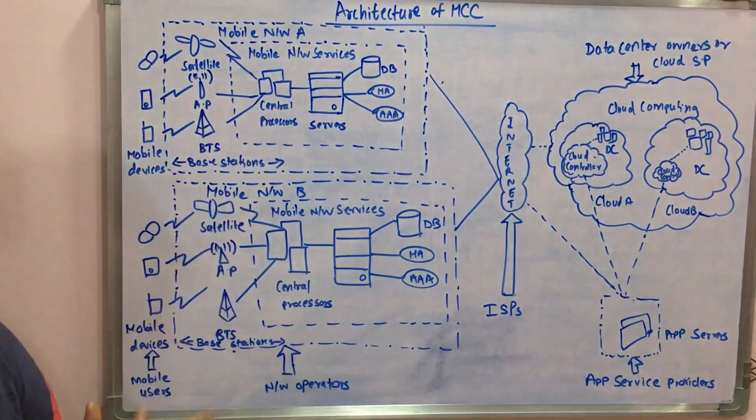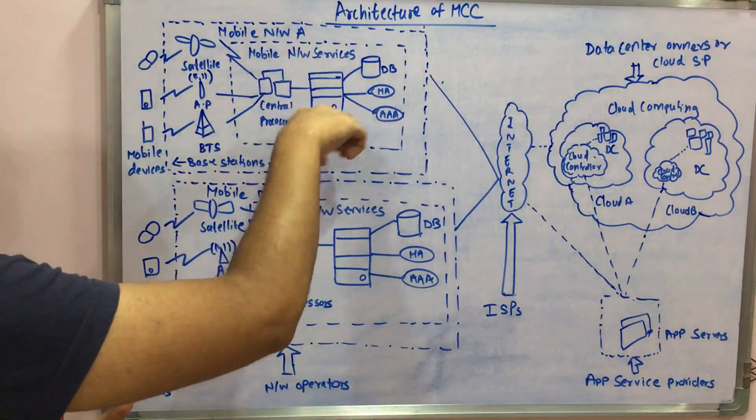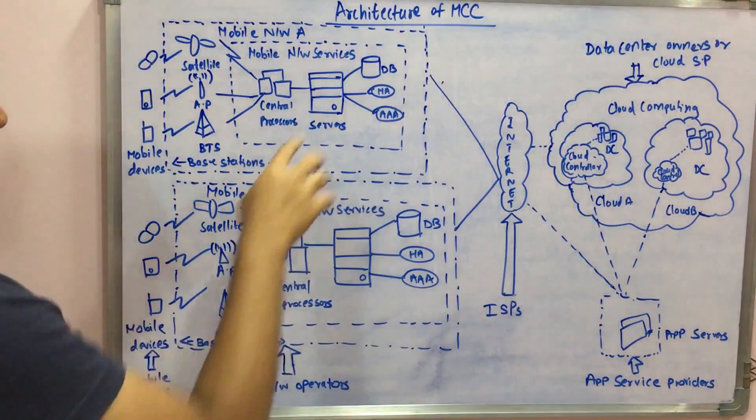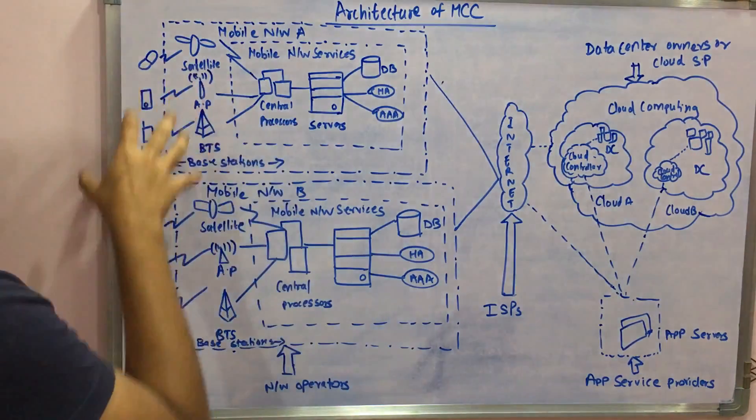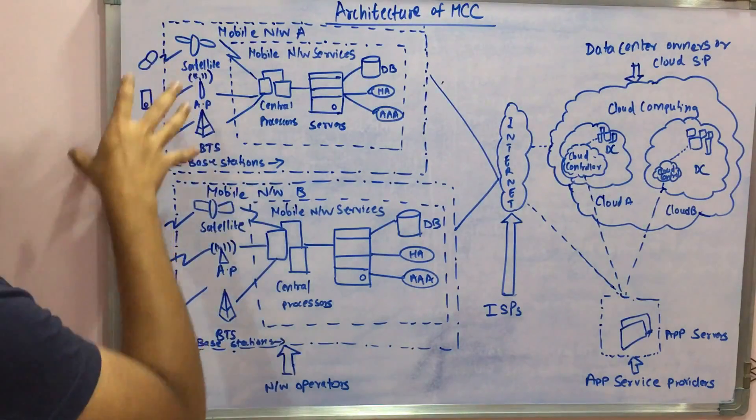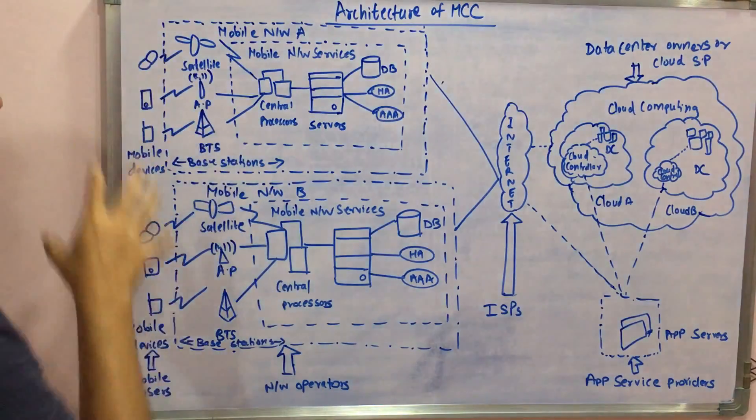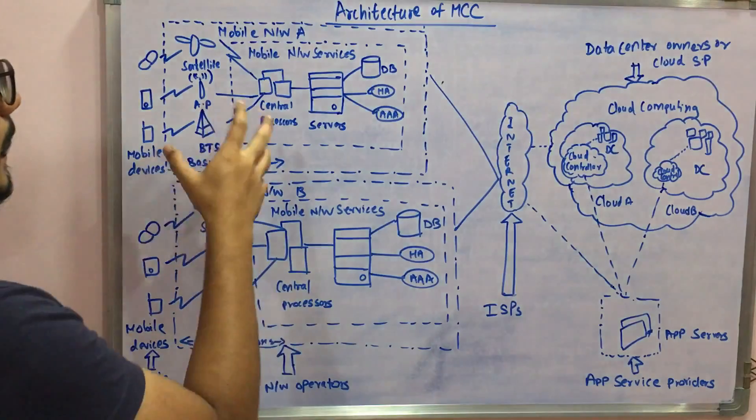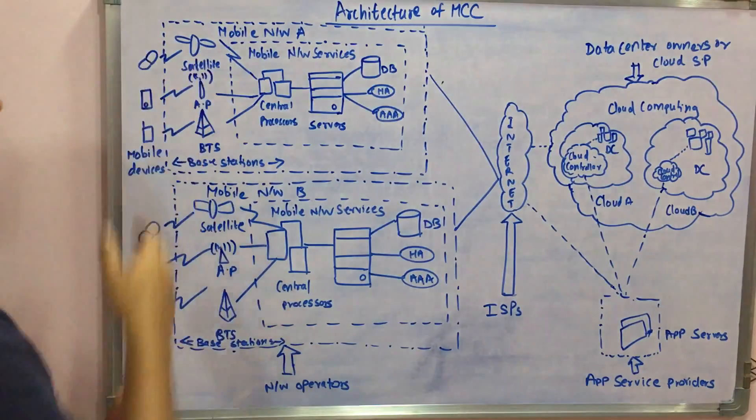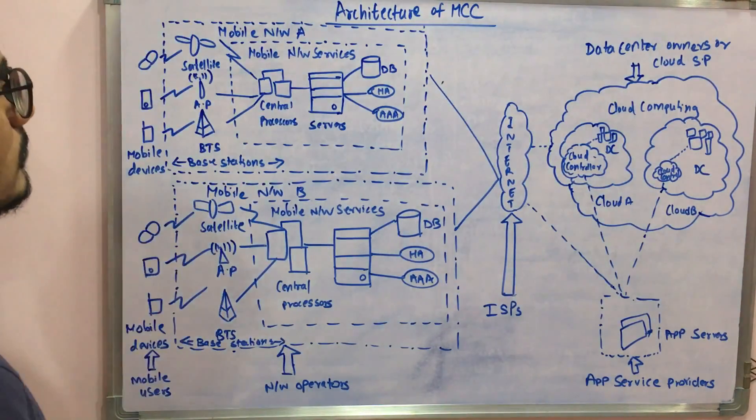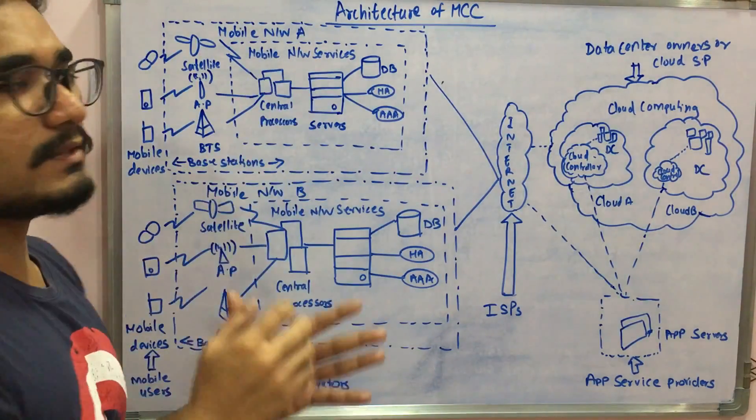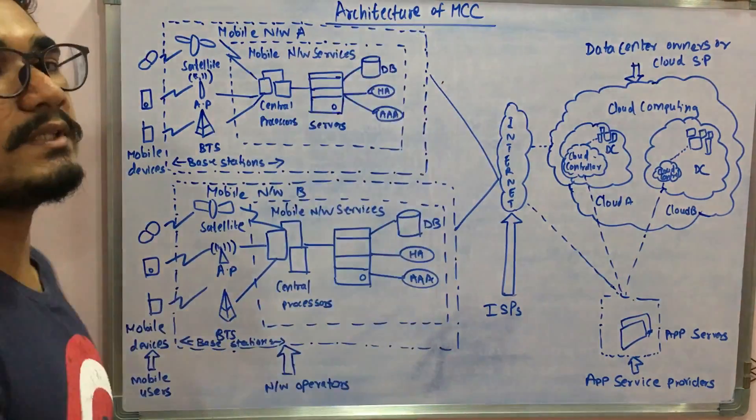When you drill down into the mobile network services, you have central processors which are used for processing the data. Central processors connect the servers, the mobile servers, and these servers receive the information from mobile devices - their MAC address, the IP address from which the data is coming, and all the requests fired by mobile devices. In turn, these mobile devices give rise to mobile network services.